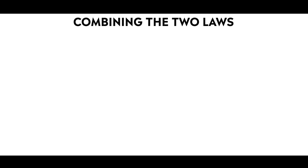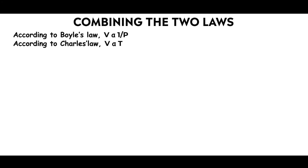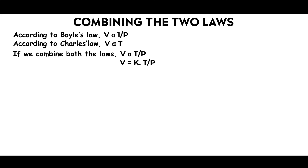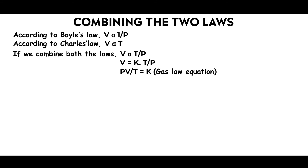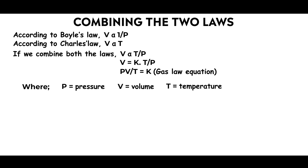Now let's combine the two laws. According to Boyle's Law, volume is inversely proportional to pressure. According to Charles' Law, volume is directly proportional to temperature. Combining them: volume is directly proportional to temperature and inversely proportional to pressure. Converting to an equation using constant K: V = KT/P. Isolating K gives PV/T = K. This is the gas law equation, where P is pressure, V is volume, T is temperature, and K is the gas constant.